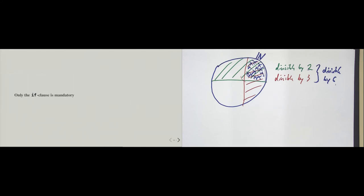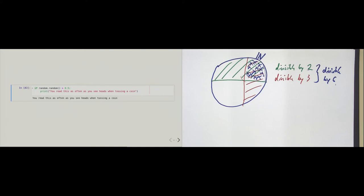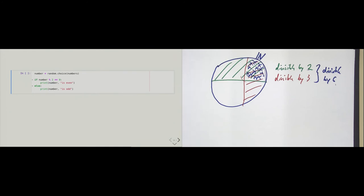A little more info: only the if clause is mandatory. Here is an example using random.random(), which returns a uniformly distributed random number between 0 and 1 — often used to model a coin toss. Executing the cell repeatedly, sometimes we see the text and sometimes we don't. We can also leave out the elif clause and have just an if-else statement, for example to check if a random number from the list is even or odd.